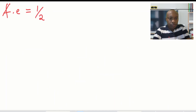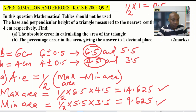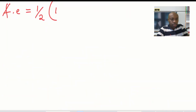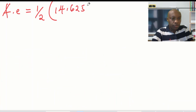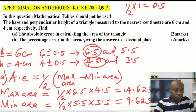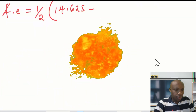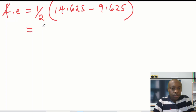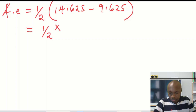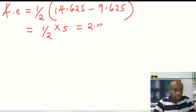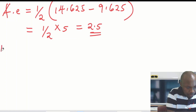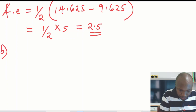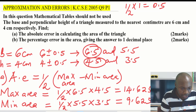The absolute error is therefore given by half times the quantity (maximum area minus minimum area): half times (14.625 minus 9.625). This gives half times 5, so the absolute error is 2.5.